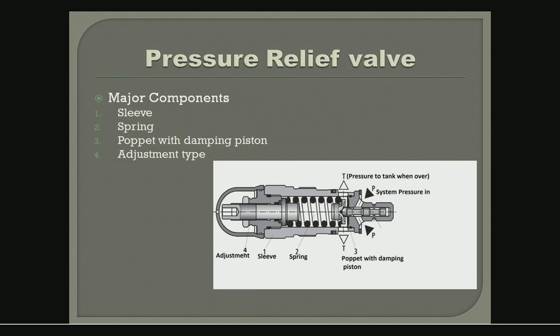A pressure relief valve has four major components: sleeve, spring, poppet with damping piston, and an adjustment. This is a cross-section view of a pressure relief valve. Now we will check a real example and discuss it in depth.